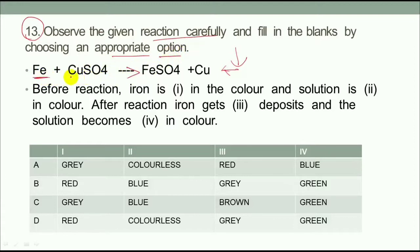Iron and copper sulphate. This solution of copper sulphate is blue in color. Iron and copper sulphate react to form ferrous sulphate and copper. This solution provides green color. Before reaction, iron is first in color and solution is second in color. After reaction, iron gets dashed deposits and the solution becomes fourth in color.